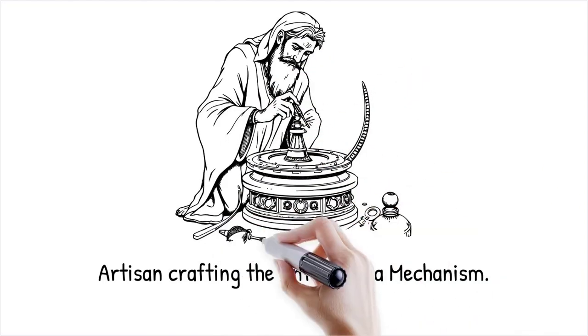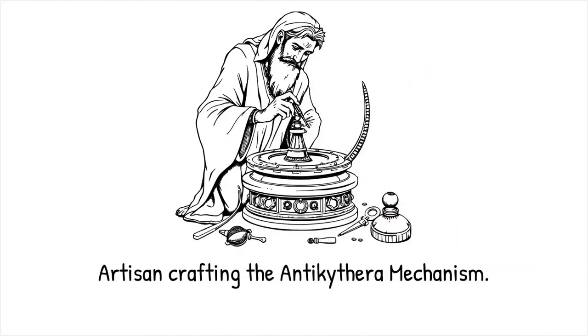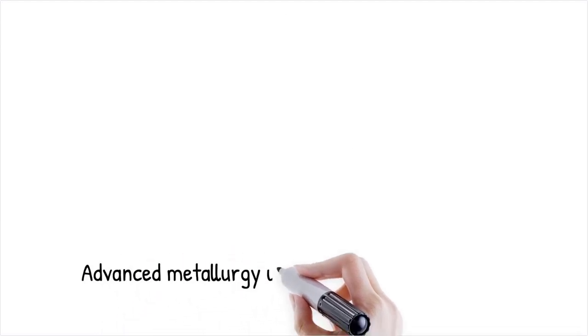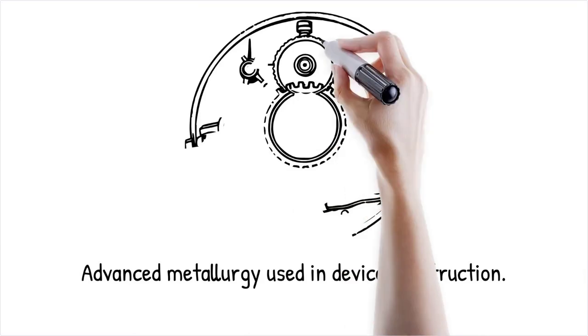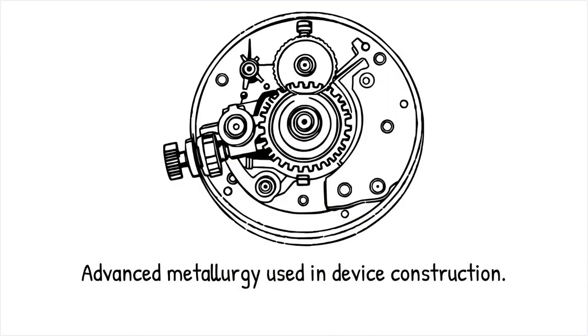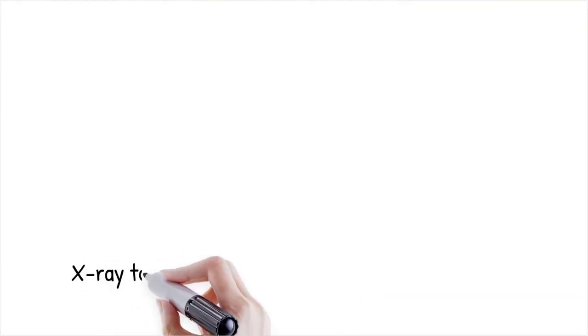The Antikythera mechanism was constructed from bronze and other durable materials that have withstood centuries underwater. The crafting techniques employed reveal a high level of metallurgical skill and an understanding of material properties. These ancient methods enabled the creation of delicate yet long-lasting components that work together in a complex machine. The survival of such a device highlights the advanced craftsmanship and resourcefulness of its creators.